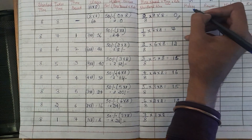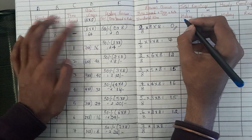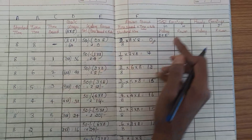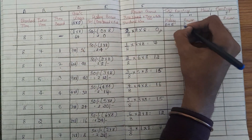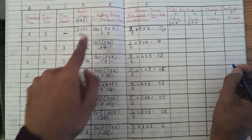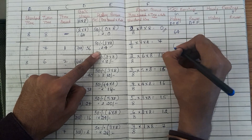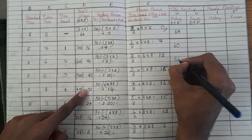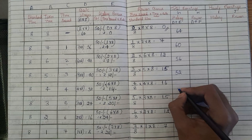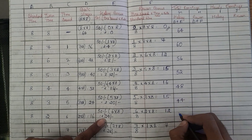Now for total earnings under the Halsey plan, we add the basic wages column (D) plus the Halsey bonus column (E): 64+0=Rs.64; 56+4=Rs.60; 48+8=Rs.56; 40+12=Rs.52; 32+16=Rs.48; 24+20=Rs.44; 16+24=Rs.40; and 8+28=Rs.36.